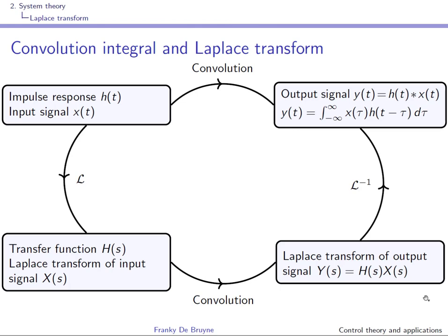A first main result is the convolution integral. If you're given the impulse response h(t) — the response to a Dirac impulse — and you're given the input signal, you can compute the output y(t) as simply the convolution of h(t) and x(t). This is again under the assumption that the system is linear time invariant.